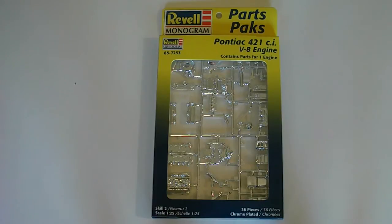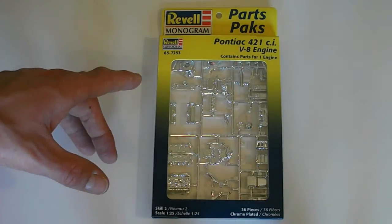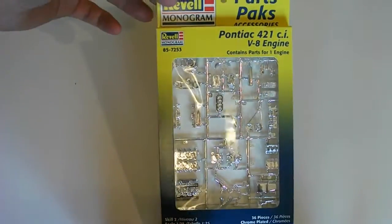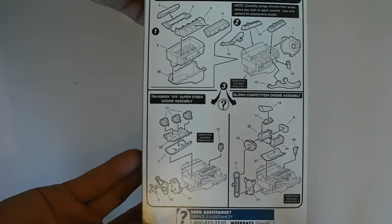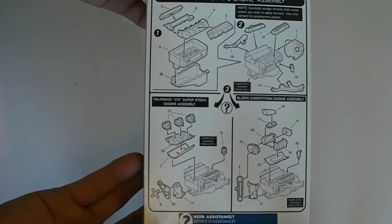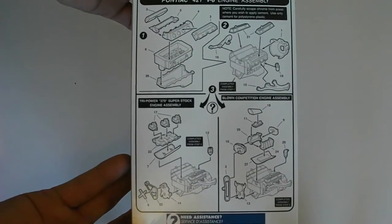The Pontiac 421 cubic inch V8 engine contains 36 pieces, skill level 2, 1/25th scale, model number 7253. Same as all the others on the outside. Here are your instructions. Nicely detailed. You can do the Tri-Power 370 Super Stock option or a blown competition engine.